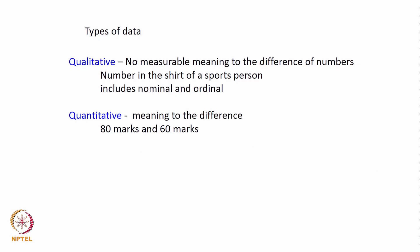Another classification is qualitative data, where there is no measurable meaning to the difference of numbers. For example, a number on a cricketer's shirt — one cricketer wearing number 12 and another wearing number 82 — these do not mean much; they just describe something. While the number helps distinguish players, you cannot say the person wearing 82 is a more senior player than the person wearing 12. Qualitative data are further divided into two types: nominal data and ordinal data.